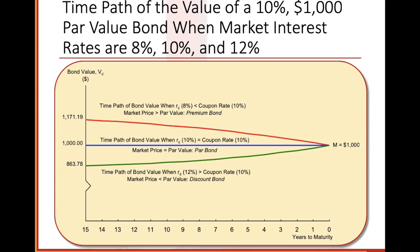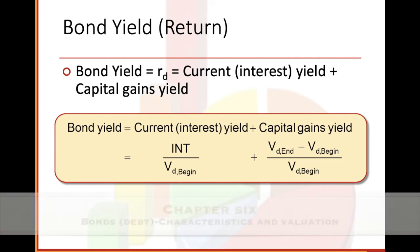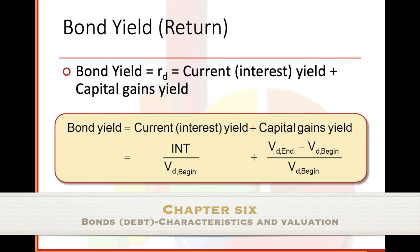Bond yield equals R_D equals current interest yield plus capital gains yield. Current interest yield is interest divided by V_D at the beginning. Capital gains yield is the difference between ending and beginning value, divided by the beginning value. Basically we're trying to find the growth or decrease over the period.